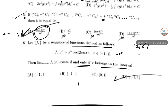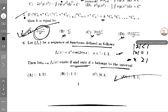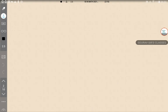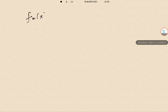We need to consider three cases based on |x|: |x| < 1, |x| = 1, and |x| > 1. Let me rewrite the function: f_n(x) = x^n · cos(2πnx), with x in [-1, +1].